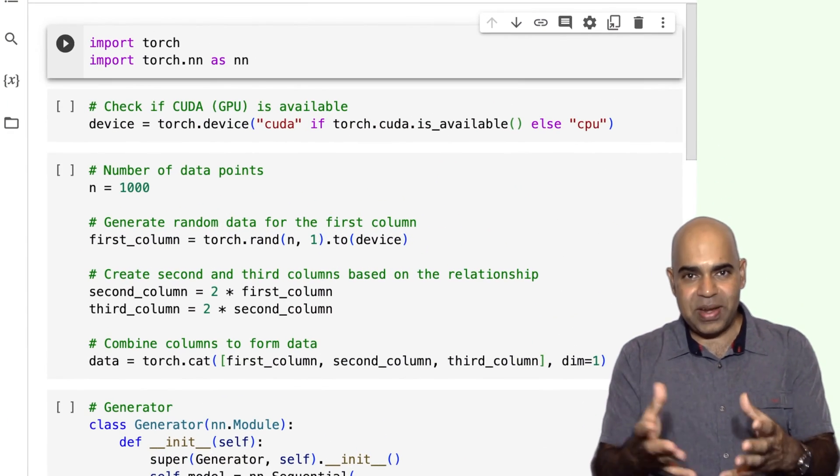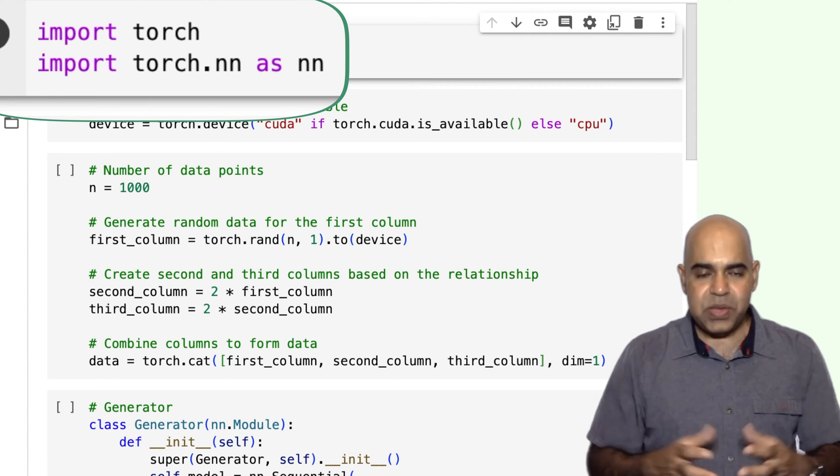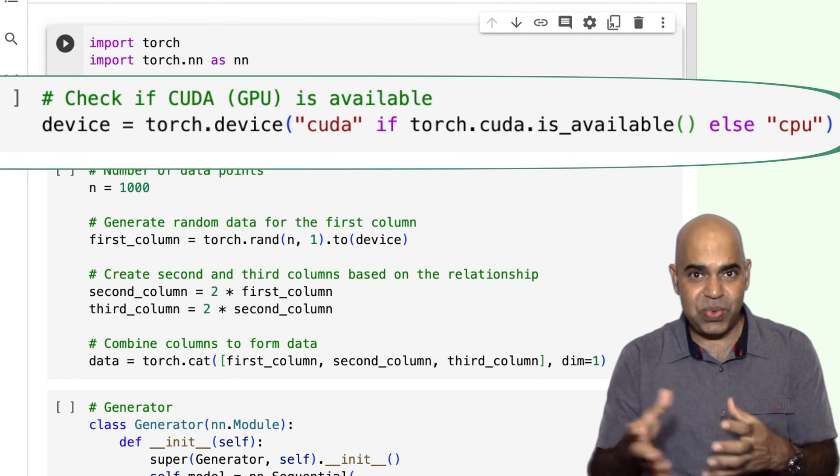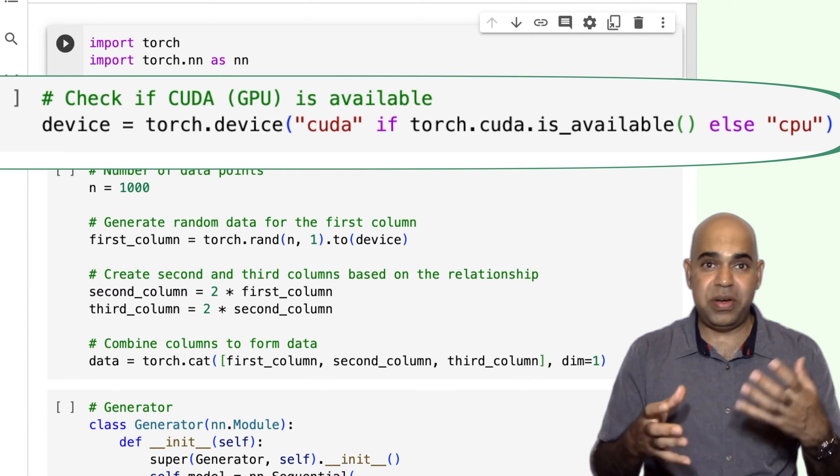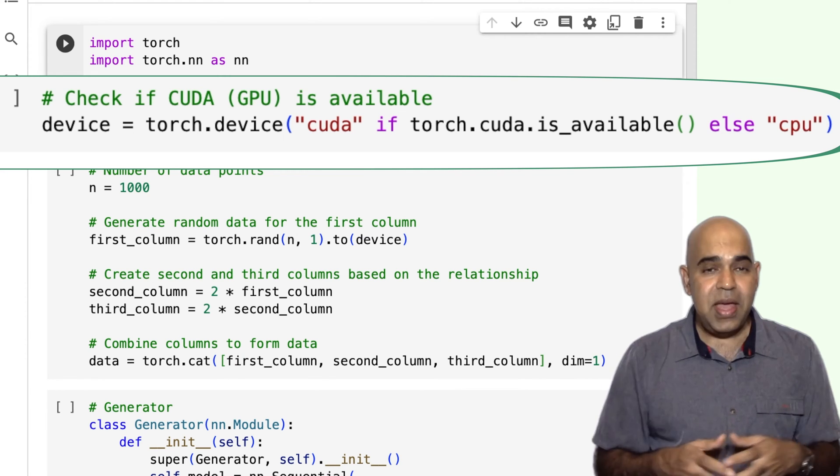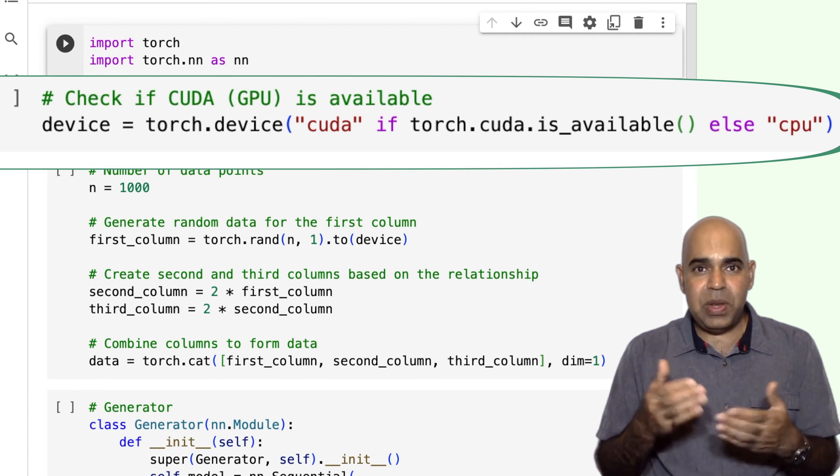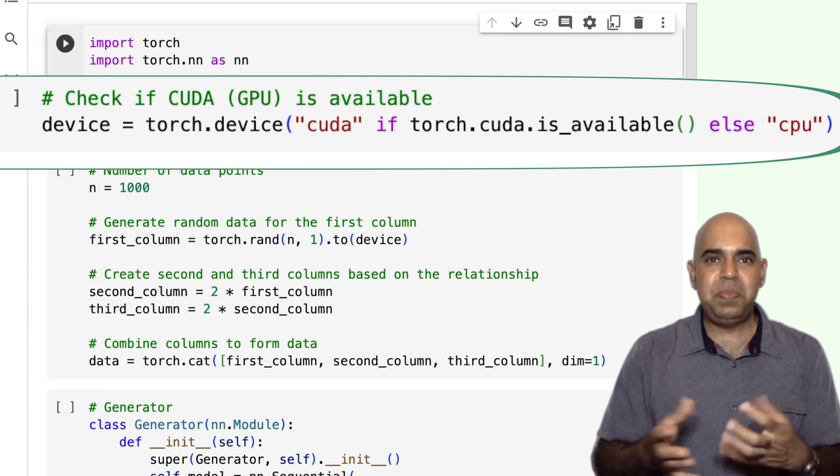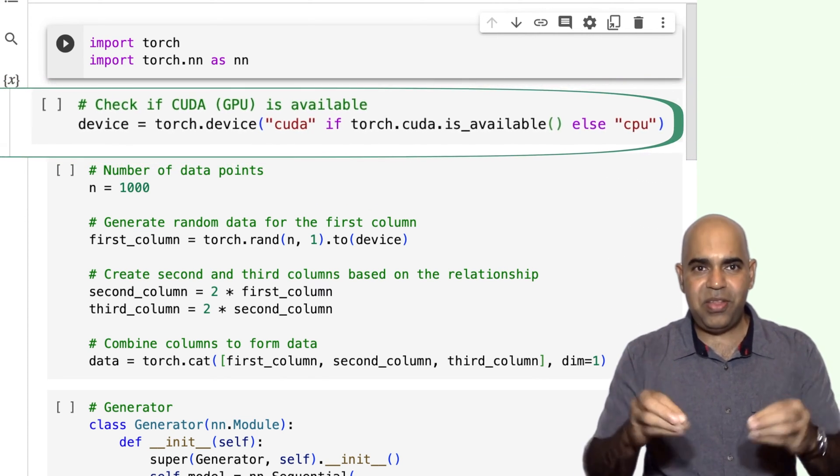I am importing necessary libraries for building and training a GAN using PyTorch. This segment checks whether the machine has CUDA available, which is NVIDIA's GPU API for general-purpose processing. If CUDA is available, then the device variable will be set to CUDA, meaning the code can leverage GPU acceleration. If not, computations will be done on the CPU.